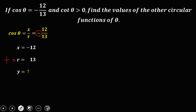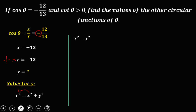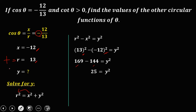y is unknown. To solve for y using the formula r squared equals x squared plus y squared, transpose x squared to the left: r squared minus x squared equals y squared. Substituting r equals 13 and x equals negative 12: 13 squared is 169, and negative 12 squared is 144. Then 169 minus 144 is 25. Taking the square root, y is positive or negative 5.